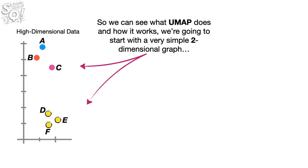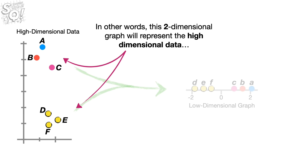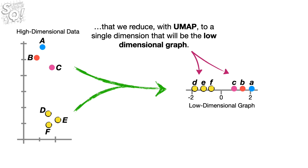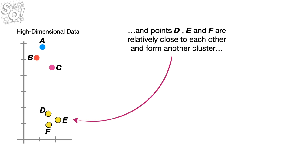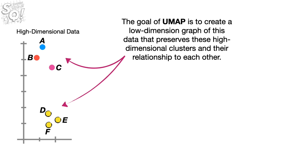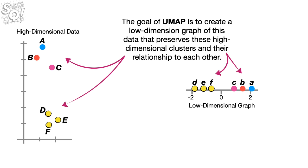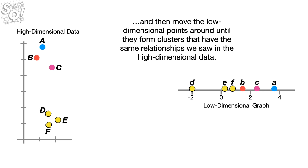To see what UMAP does and how it works, we'll start with a simple two-dimensional graph and show how UMAP converts it to a one-dimensional number line. If we look at the high-dimensional data, we see that points A, B, and C are relatively close to each other and form a cluster, and points D, E, and F form another cluster. Both clusters are relatively far from each other. The goal of UMAP is to create a low-dimensional graph that preserves these high-dimensional clusters and their relationship to each other.